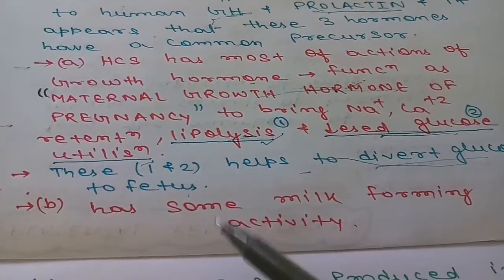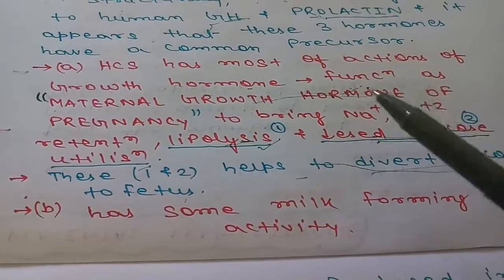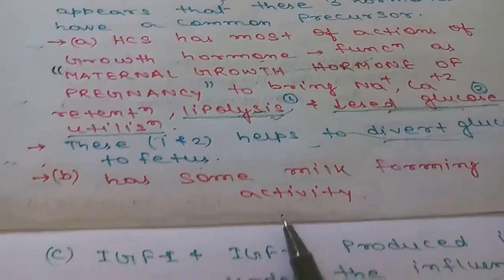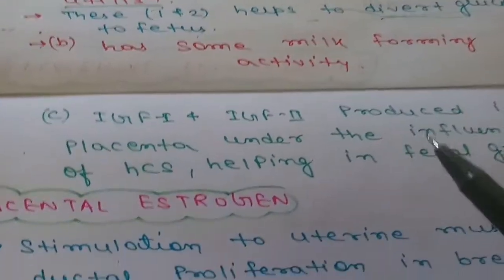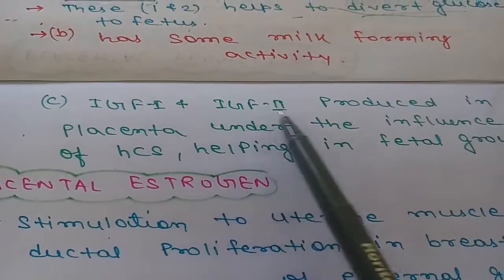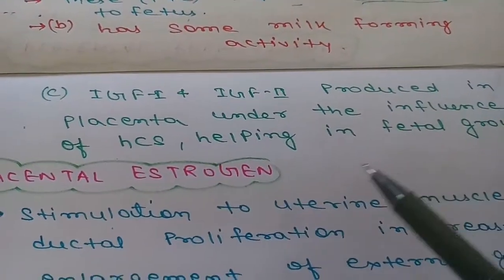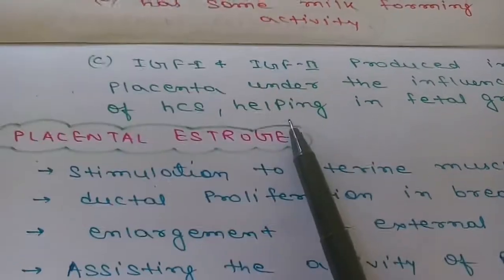The second function is it has milk forming activity, so it is known as lactogenic and was called human placental lactogen earlier. The third function is it helps in the production of IGF-1 and IGF-2, insulin growth factors produced by placenta, which influence fetal growth.